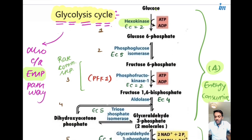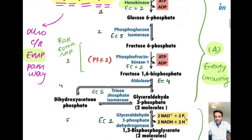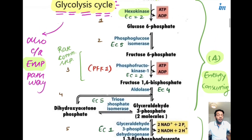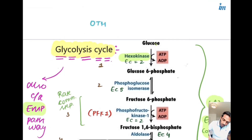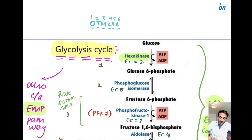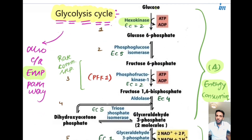For NEET PG, you must remember all steps with all enzymes and their EC numbers. EC stands for enzyme classification — oxidoreductase, transferase, hydrolyase, lyases, isomerase, and ligases, numbered one through six. For the USMLE aspect, it is not very important. In this video I am discussing the USMLE pattern, so we will focus only on the important steps, rate limiting steps, and important enzymes.